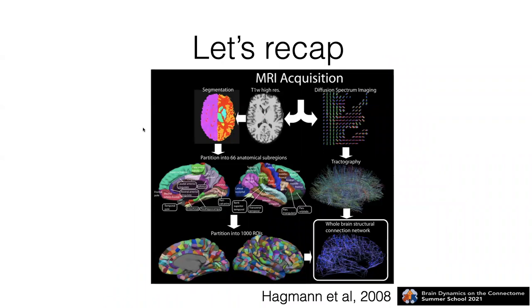To recap, to build the connectome the method is pretty streamlined nowadays. You need diffusion imaging of some type, you need a high-resolution anatomical method, and then use segmentation and tractography. You combine all this to come up with a connectivity matrix. In the old days this was homemade code — everybody had their own solution. Nowadays there are several software packages that allow doing this in a quite efficient and robust way.